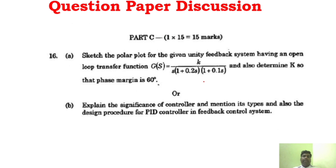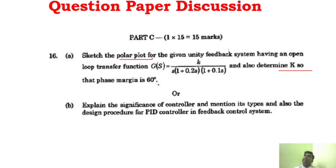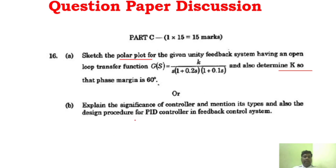For Part C: Unit 2 involves K-value problems. Unit 3 covers Bode plot and polar plot — polar plot appears as the Part C problem in this question paper. This covers the November 2022 question paper under Regulation 2021. To pass, you need to attempt questions from three areas per unit — that is more than enough.